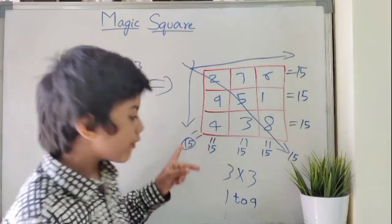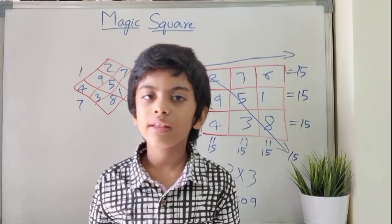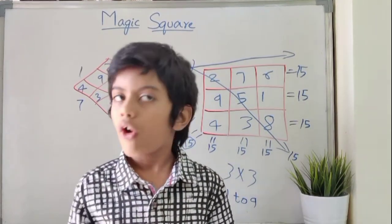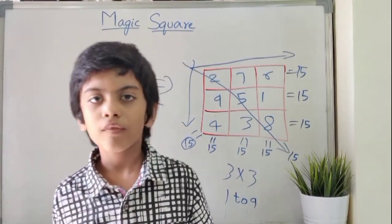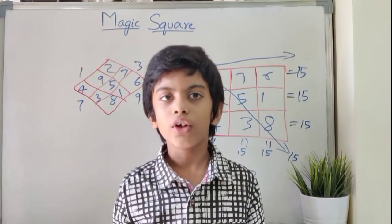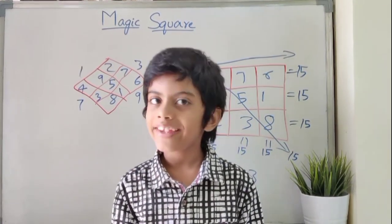So here, the 15 is the magic sum. You can try this with even numbers, odd numbers or multiples of 10. In the next video, we'll see n size magic square. Thank you!